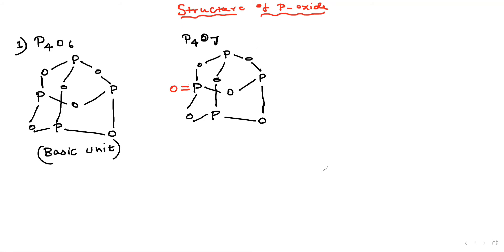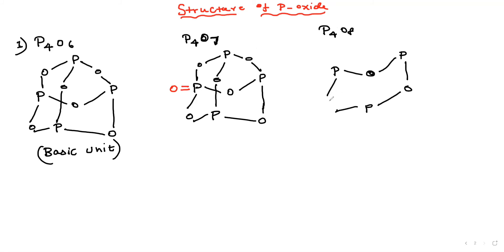For P4O8, we make two P=O double bonds — on two phosphorus atoms. Start with the basic P4O6 unit, place phosphorus and oxygen alternately, then add two P=O double bonds. This is the structure of P4O8.